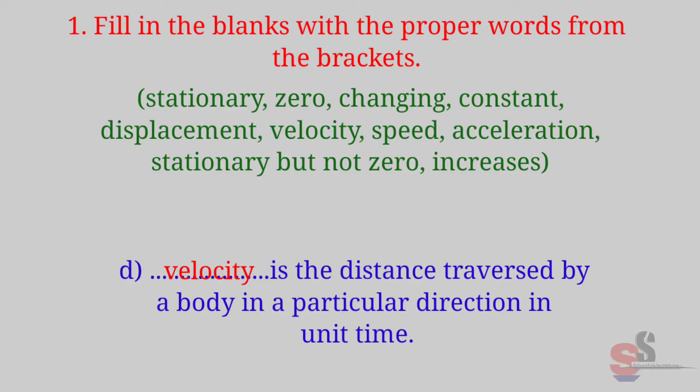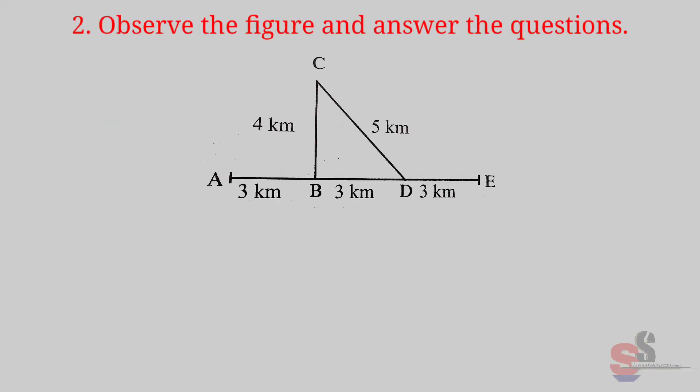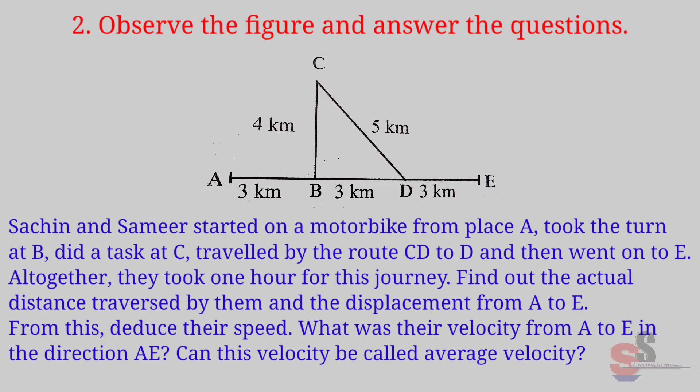Question 2: Observe the figure and answer the questions. Sachin and Samir started on a motorbike from place A, took the turn at B, did a task at C, traveled by the route CD to D and then went on to E. Altogether, they took one hour for this journey.